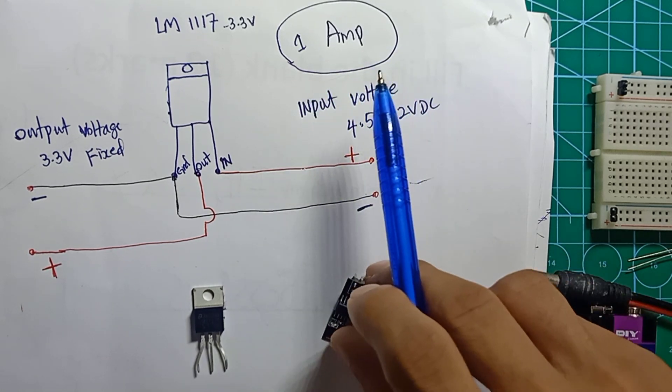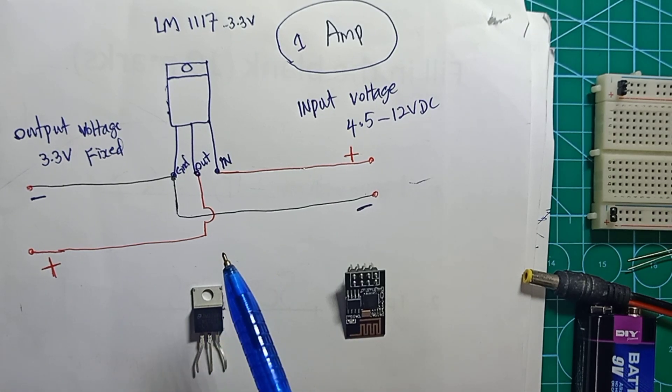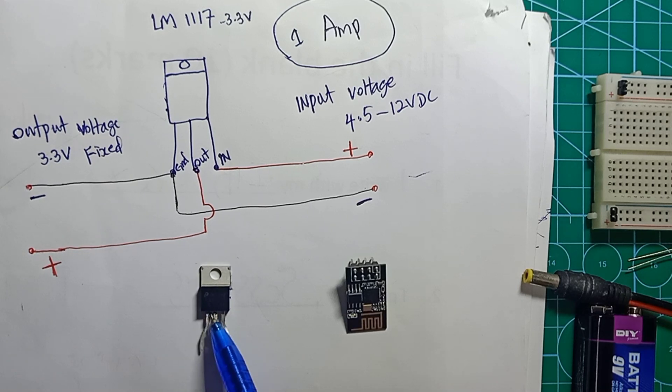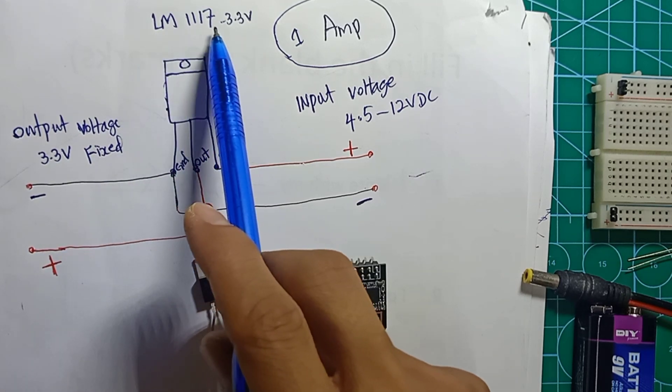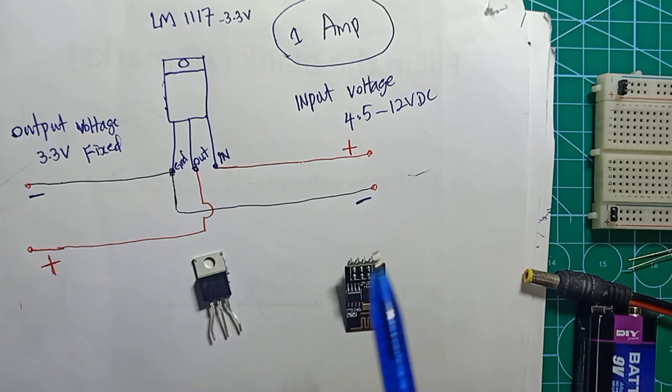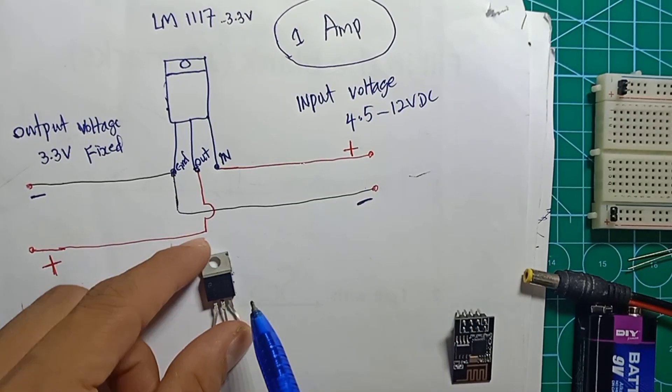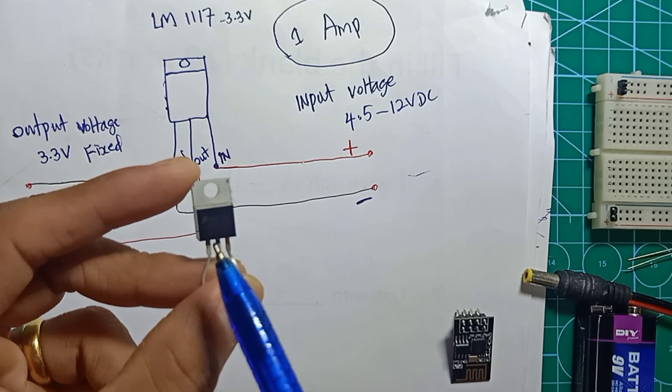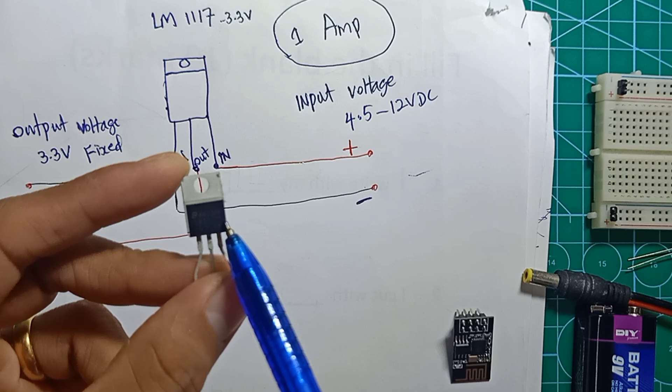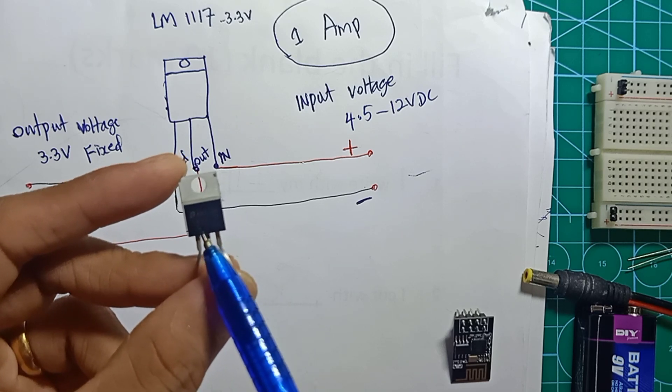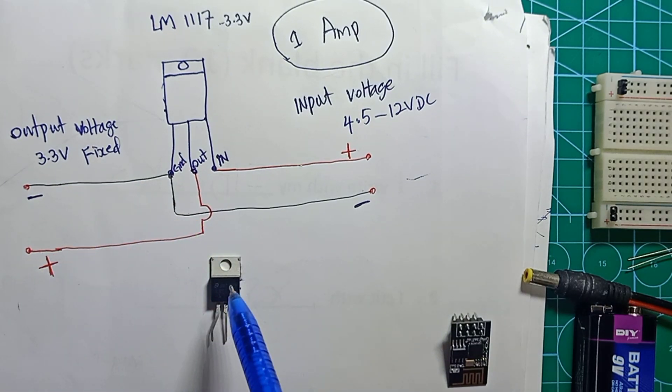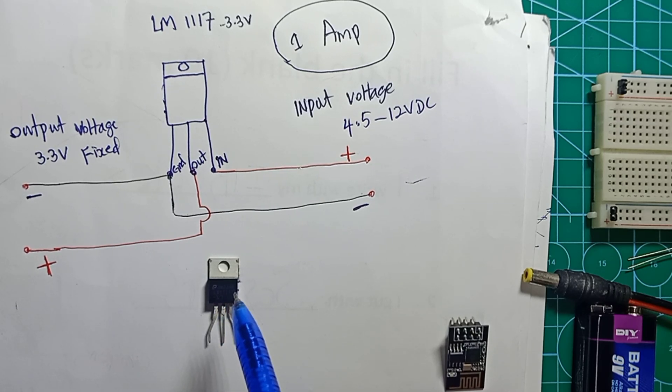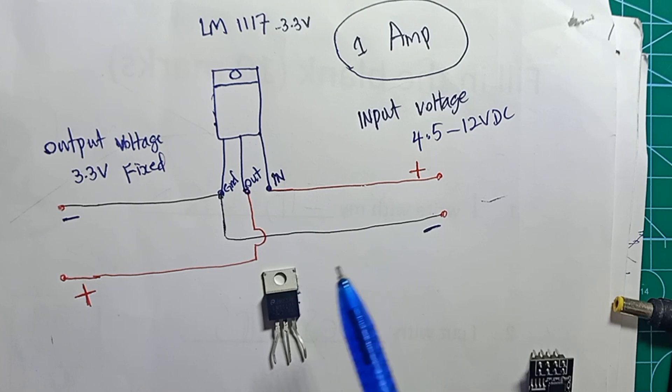In this case, you need to have a 3.3 volt DC regulator. This is very convenient - I have here an LM1117-3.3V. If you look at the body number here, it will be written LM1117-3.3V, meaning that this IC has a 3.3 volt output.